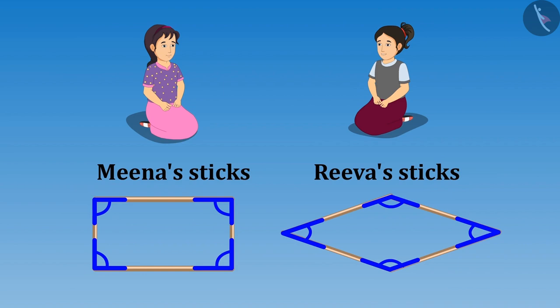Oh yes! But why is it so sister? Because the angles in both figures are different. Just look here, the angles in your figure are like this. And the angles in my figure are like this. Because of different angles, the shape of figures are also different.